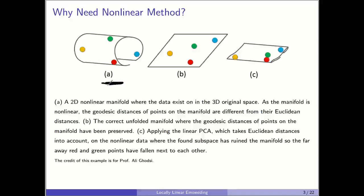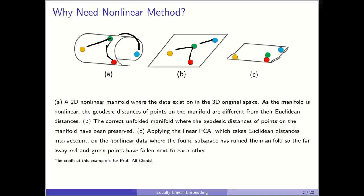We have a nonlinear manifold in figure A. The points are on this nonlinear manifold. The correct unfolding of this manifold is shown in figure B, where the distances of points on the manifold are preserved. However, when we apply a linear method on this nonlinear manifold, it doesn't unfold it correctly and becomes like figure C, where the green point and red point fall on each other, although they were far away. It doesn't care about the geodesic distance on the manifold.